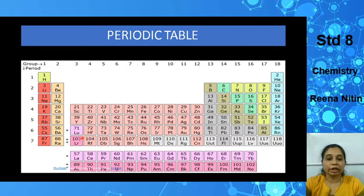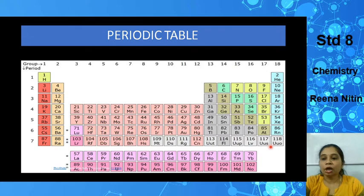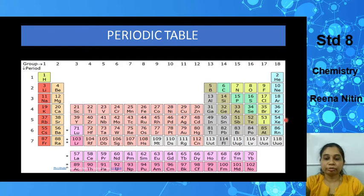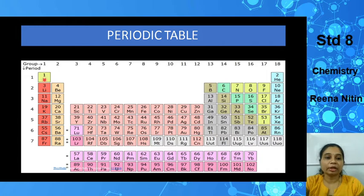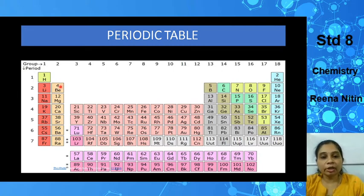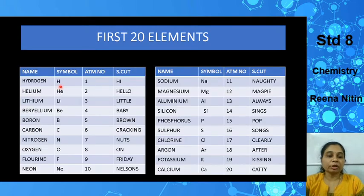Here is the periodic table — don't worry, you don't have to learn it by heart. This shows the 118 elements discovered so far. From elements 1 to 20, up to calcium, you need to know these by heart. You should know the atomic number of each — for example, lithium is 3, beryllium is 4, and so on. I have summarized this with a shortcut method to help you learn the atomic numbers of elements 1 to 20.